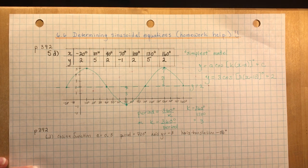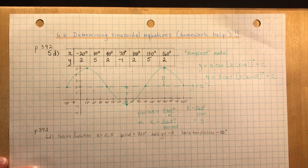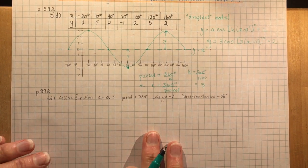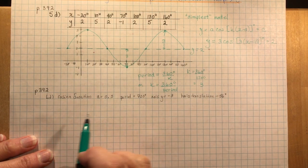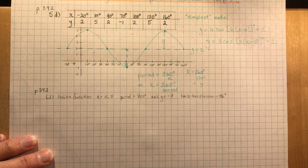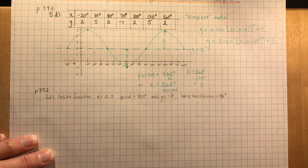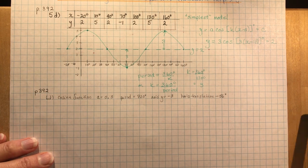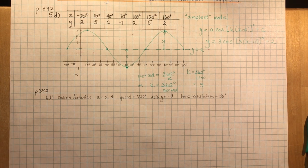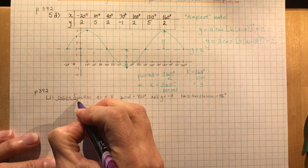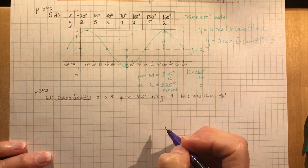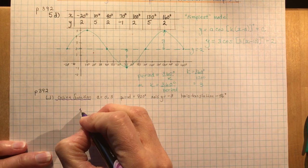Question 6d gives you some information about a cosine function and says: determine the equation of the cosine function whose graph has each of the following features. So we're writing a cosine function. The general form is y = a·cos(k(x − d)) + c.